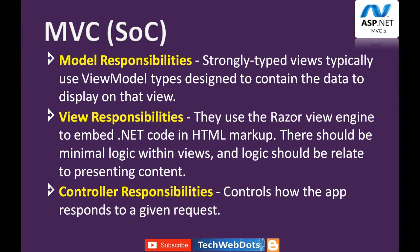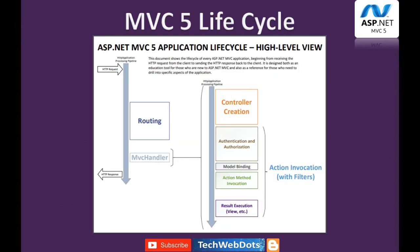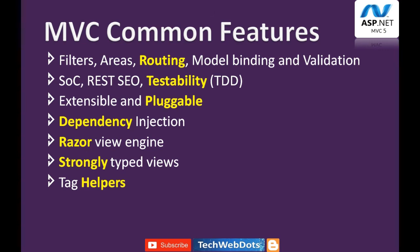Now let's look at the ASP.NET MVC 5 application lifecycle at a high level. When a request is sent, the HTTP application processing pipeline starts, checks routing, then the MVC handler takes over. First, the controller action method is resolved, then it checks for authentication and authorization. If authenticated, it proceeds to model binding and action method invocation, determining which action method will be called. Finally, the result is executed and returns the response — either a View, a string, or JSON data — back to the browser.